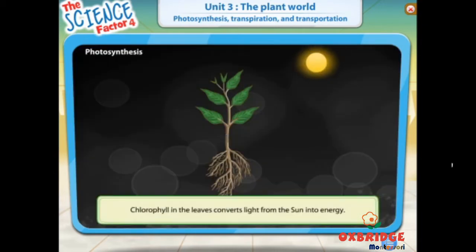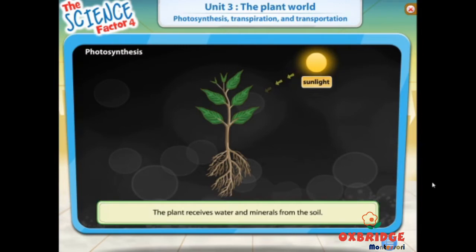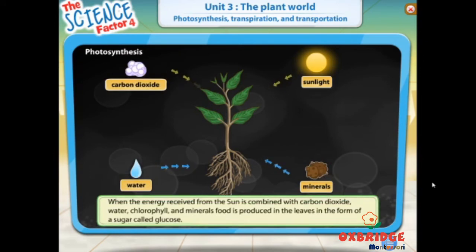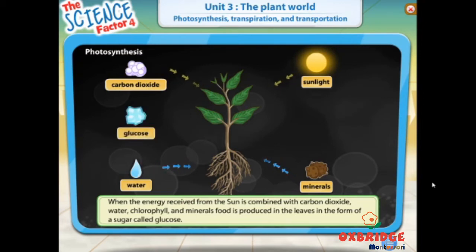Chlorophyll in the leaves converts light from the sun into energy. The plant receives water and minerals from the soil. The plant receives carbon dioxide from the air. When the energy received from the sun is combined with carbon dioxide, water, chlorophyll and minerals, food is produced in the leaves in the form of a sugar called glucose.